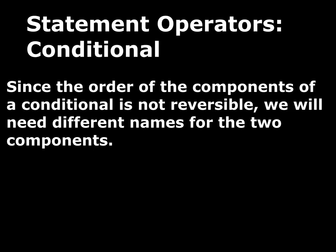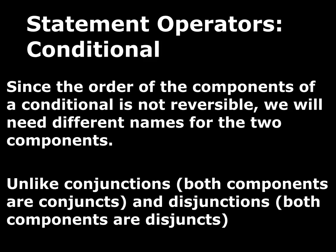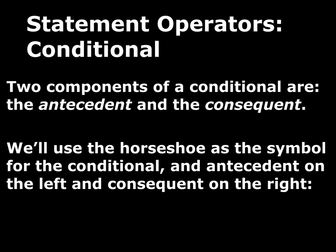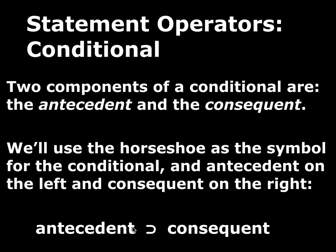Since order matters for conditionals, we need two different names for the two components. With disjunction we can call both components disjuncts, and with conjunction we can call both conjuncts, because the order is irrelevant. With conditionals, order matters, so we need different names for the two components. We're going to call them the antecedent and the consequent. We'll use a horseshoe as our symbol for translating the conditional, and we always put the antecedent first on the left and the consequent second on the right — so it always looks like: antecedent horseshoe consequent.